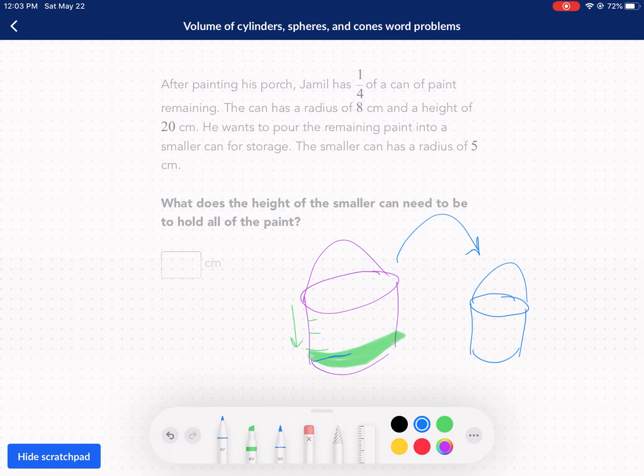And let's go ahead and label some other things. So we're told that he's got a fourth of a can of paint. The can has a radius of eight, so we're going to draw that radius in there. So there's our radius, and that's 8 and a height of 20. They're all in centimeters, so we're good there. So this is 20.